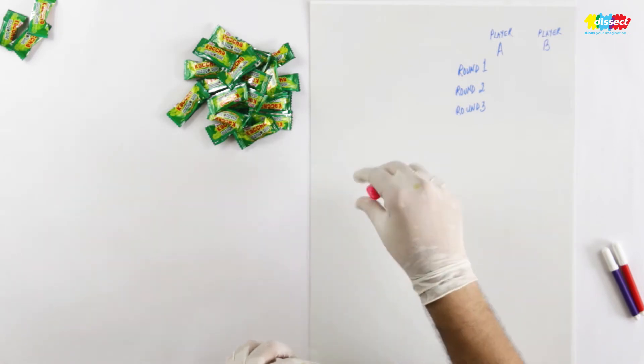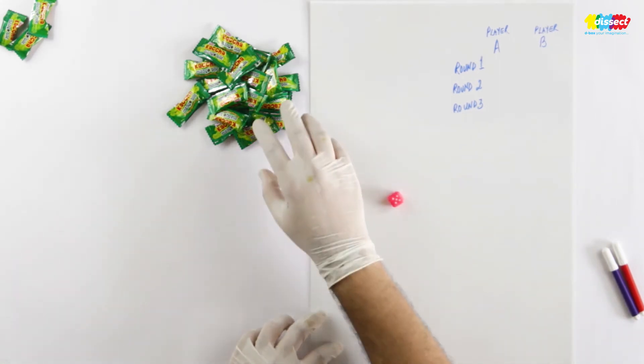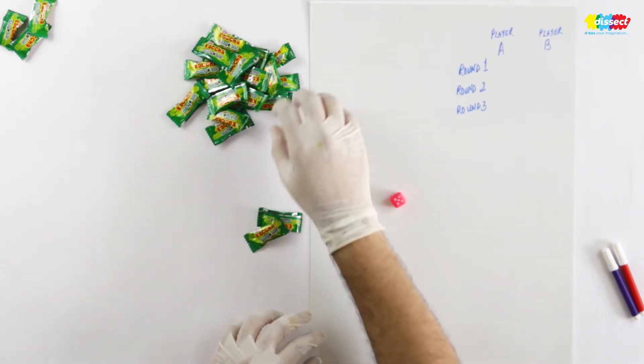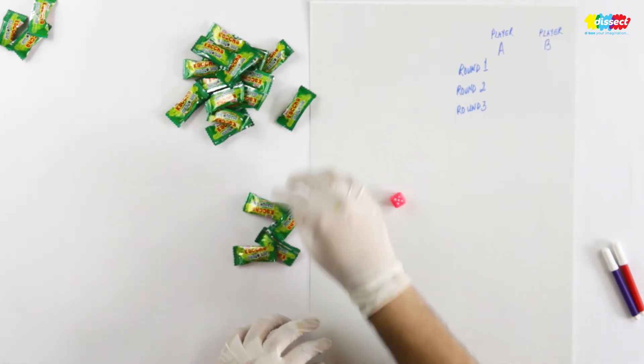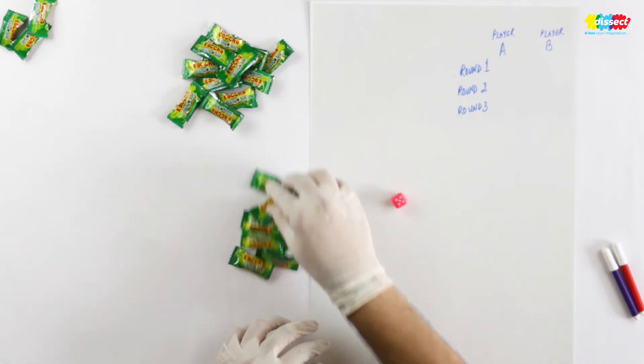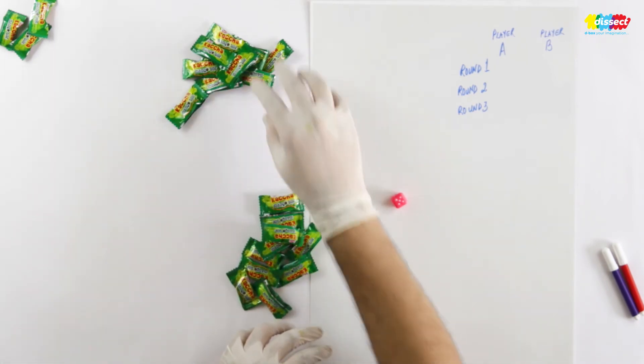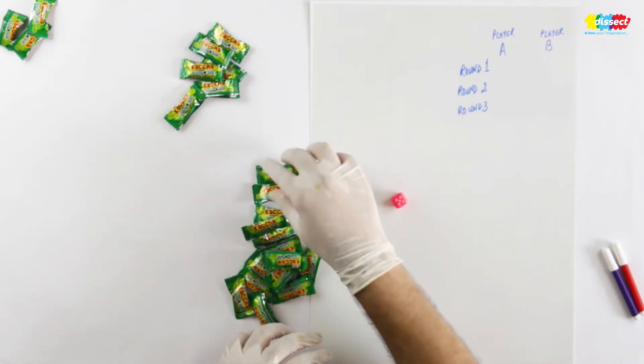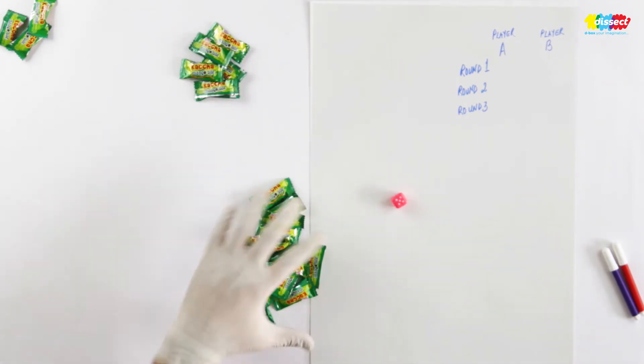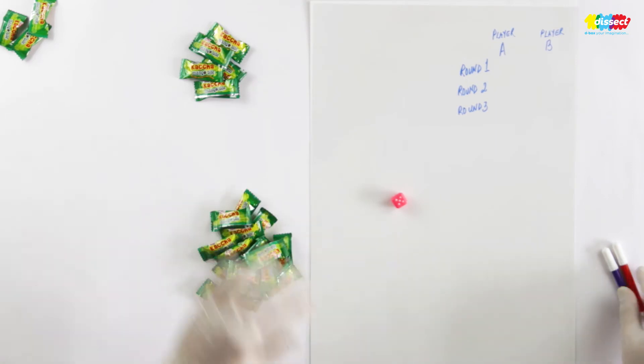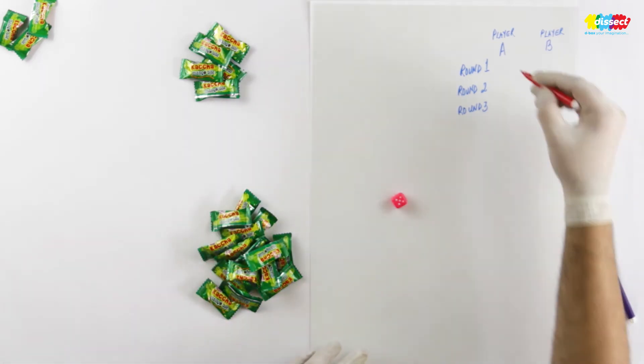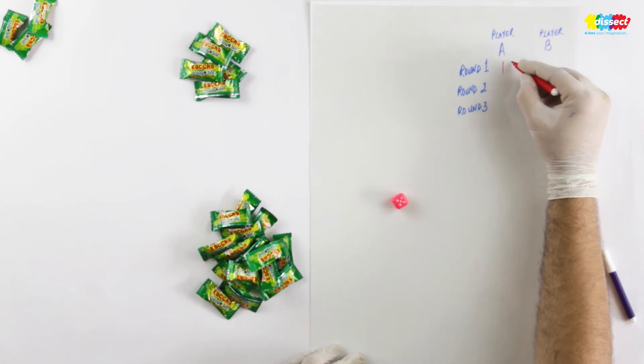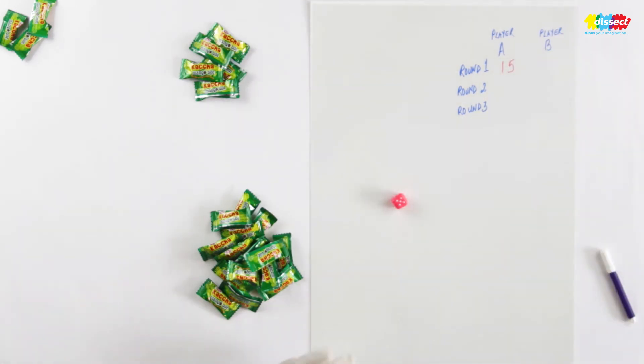Player A round 1, we have 5. So 5 means I will have to drop 15 chocolates. 2, 4, 6, 8, 10, 12, 14 and 15. So this is what player A has won. Player A score 15, so round 1 player A has scored 15.